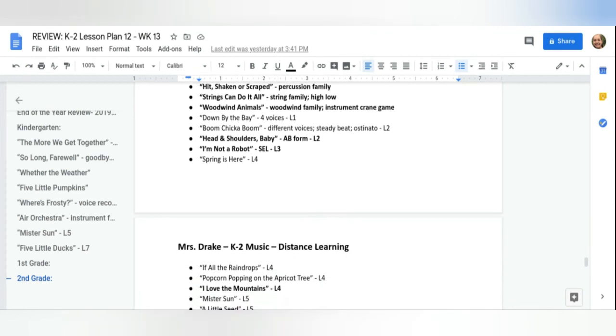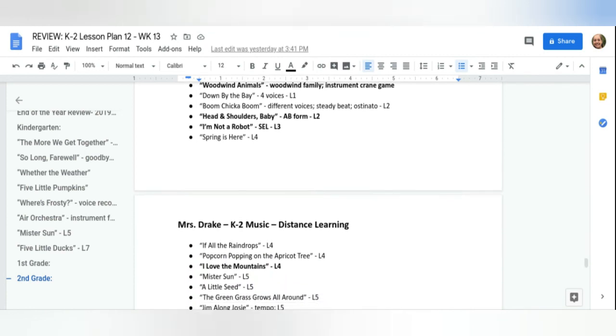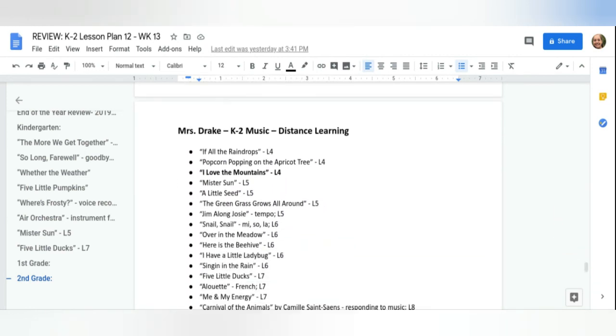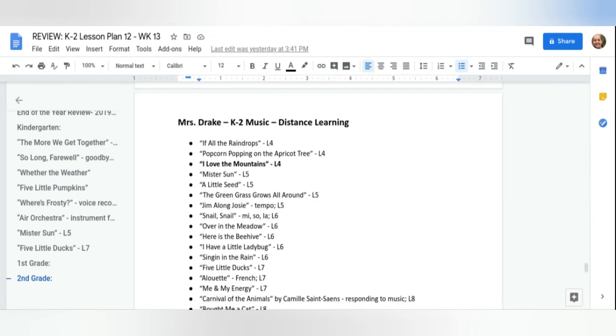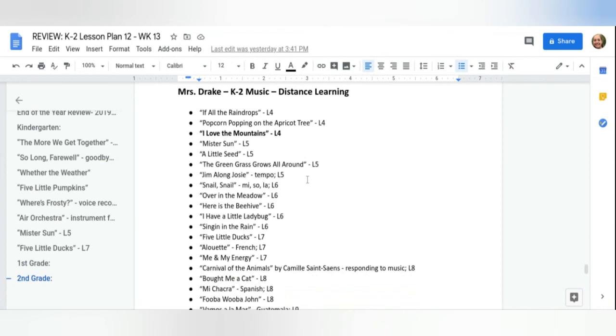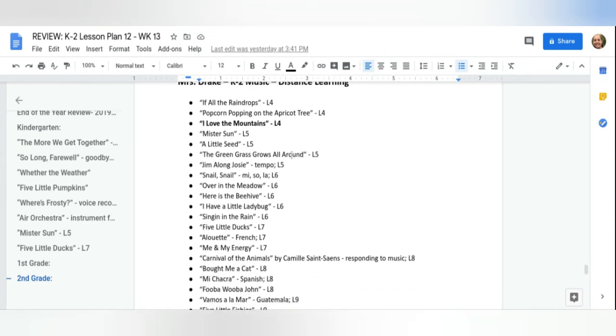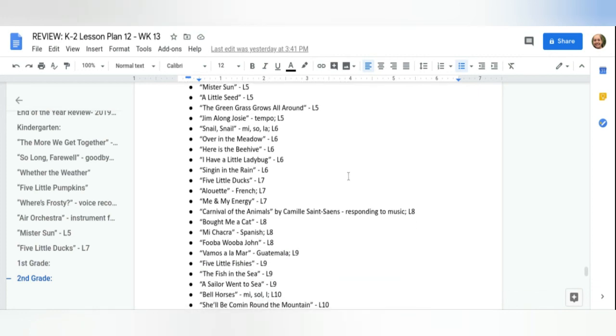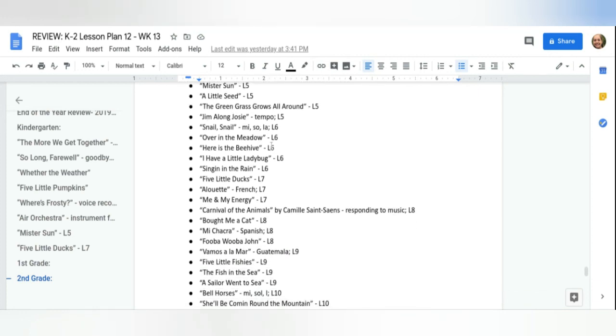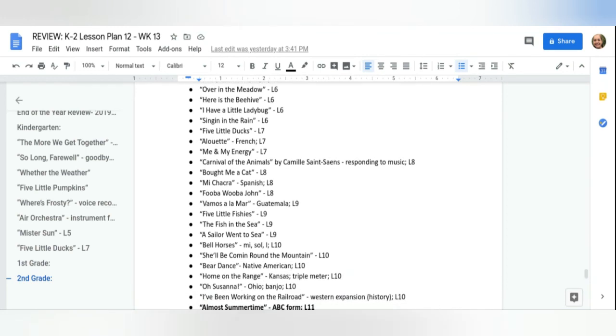So these are all the songs that we've done in our distance learning lessons. A lot of you guys really liked Spring Is Here and I Love the Mountains, or Popcorn Popping on the Apricot Tree. Mr. Sun was a popular song. The Green Grass Grows All Around. That one we loved. Snail, snail. A lot of students really liked snail, snail. Go around and round and round. Right? That was all our spring-themed lessons in the beginning.